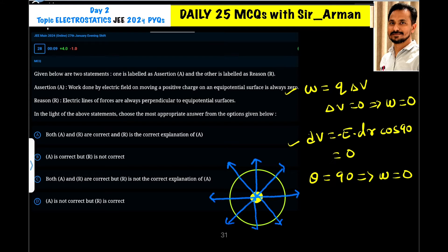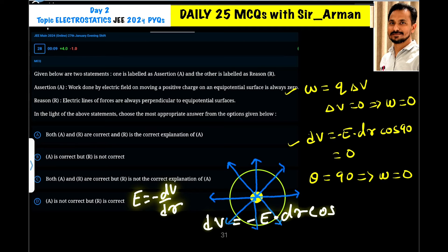Now, what about reason? Electric lines of force are perpendicular to the equipotential surface. We know that E is equals to minus dV by dr. So we can write dV is equals to minus E dot dr cos theta.